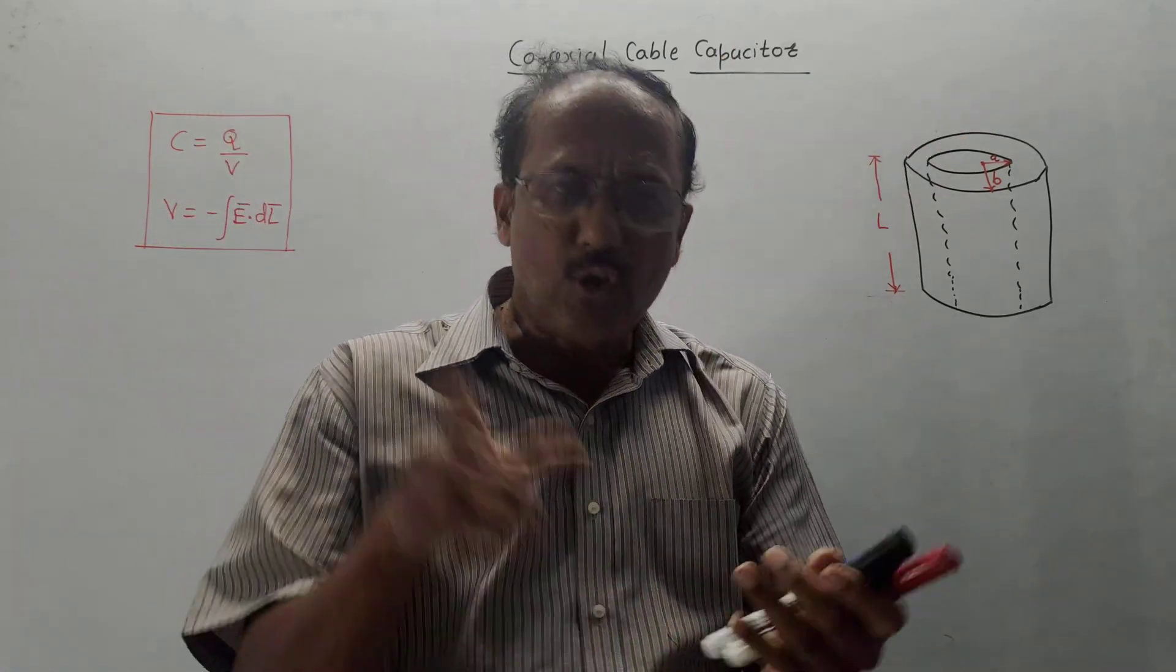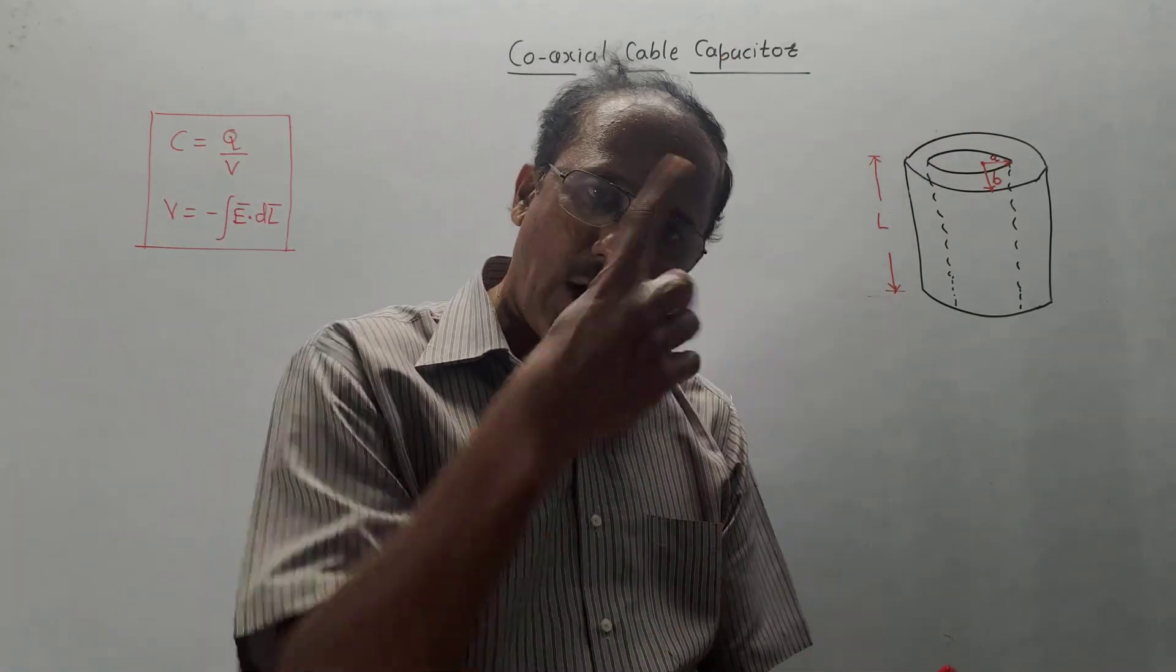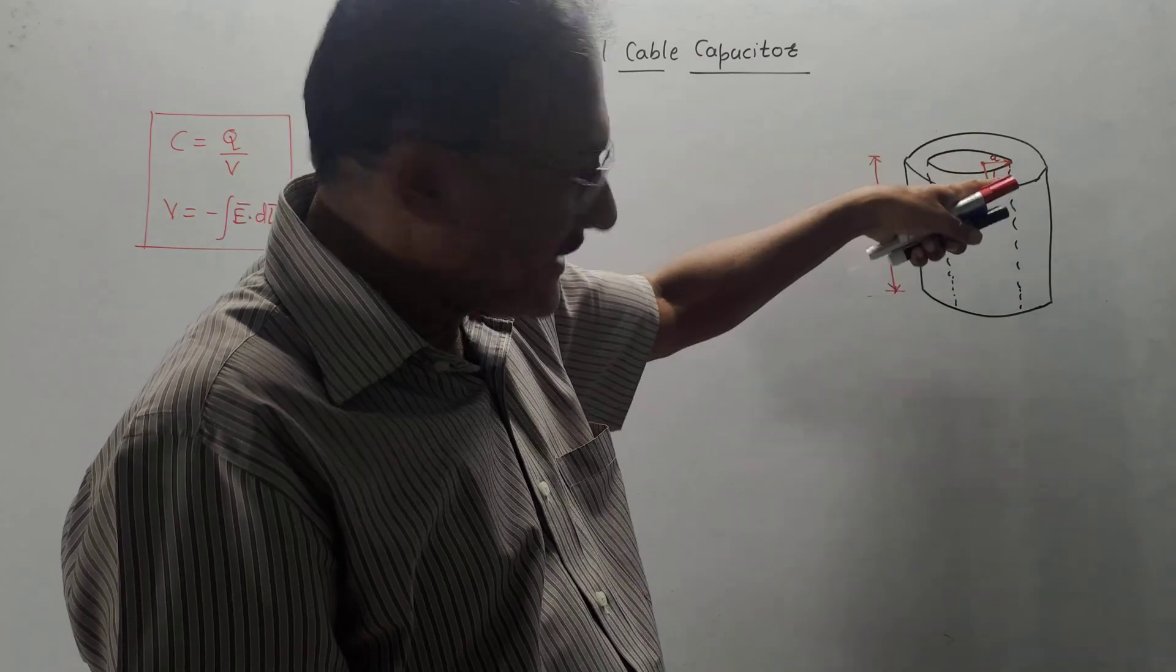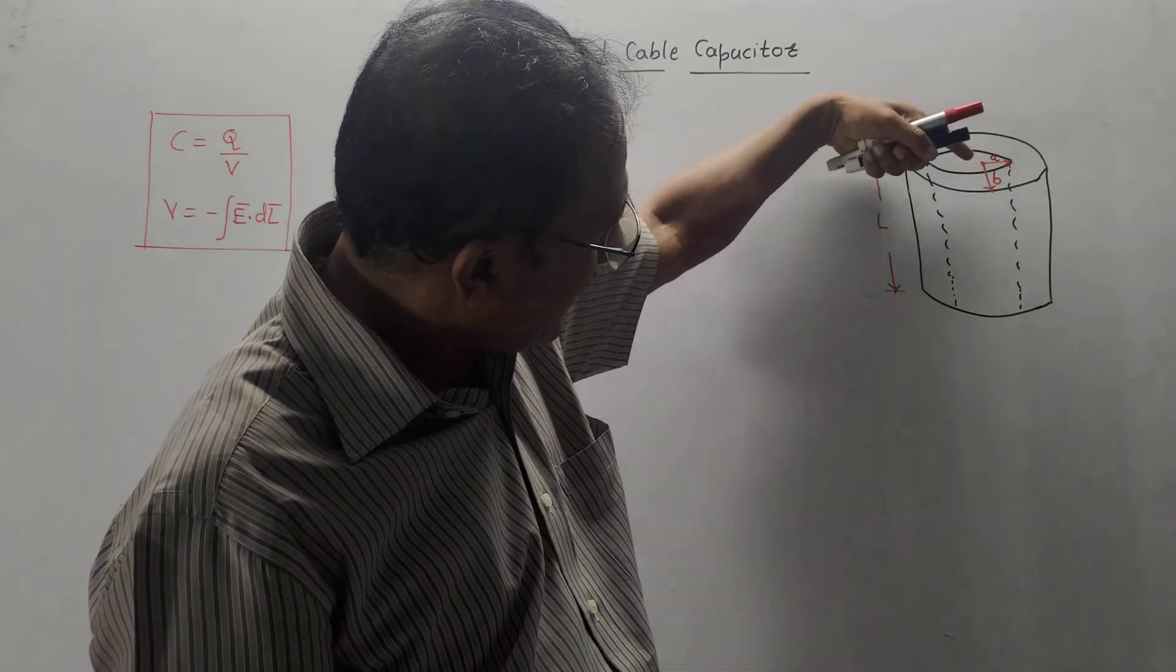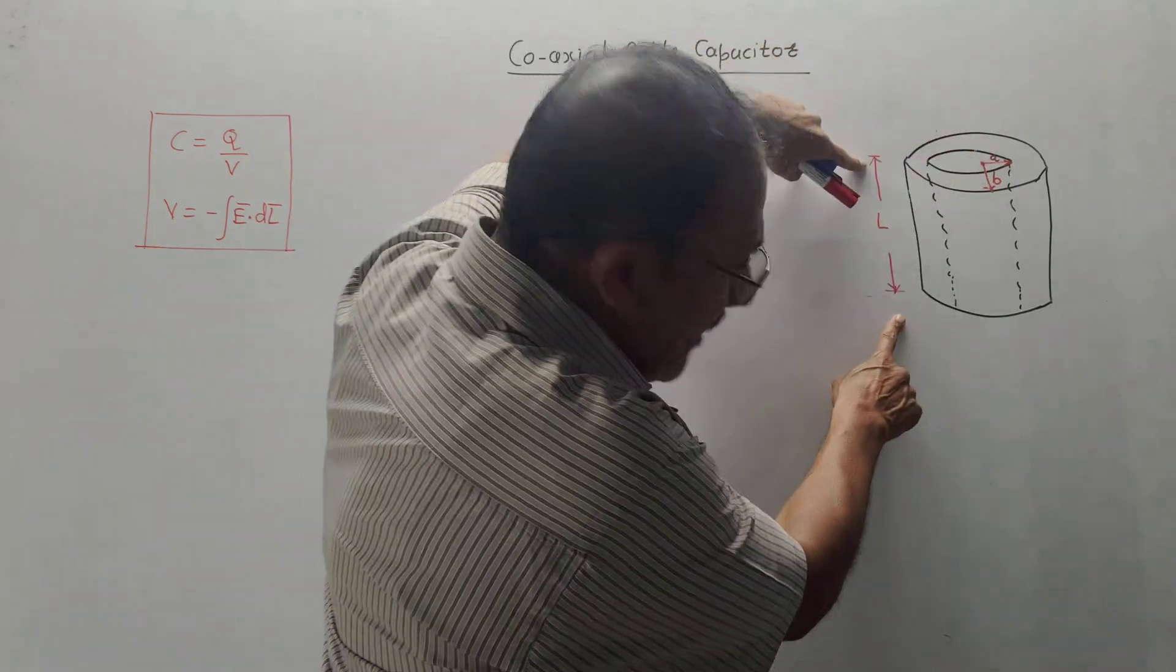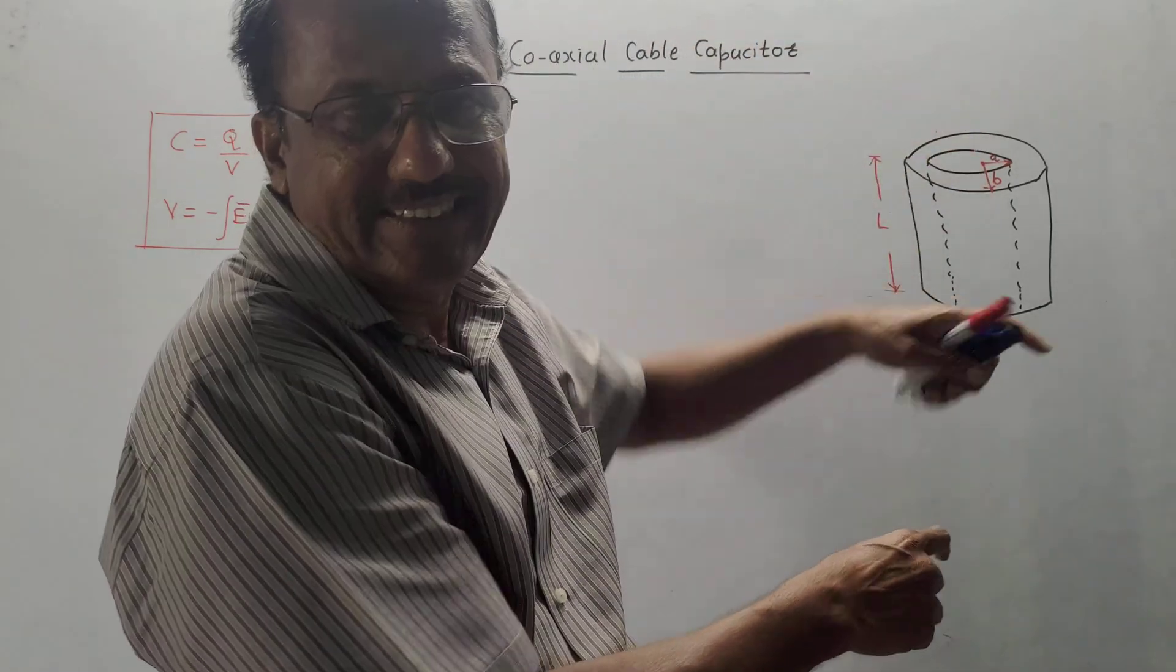In case of coaxial cable, there are two cylinders, inner cylinder and outer cylinder as shown in this diagram. Let us assume that the radius of inner cylinder is A, radius of outer cylinder is B. Let L be the length of this coaxial cable.